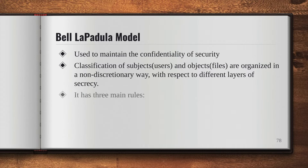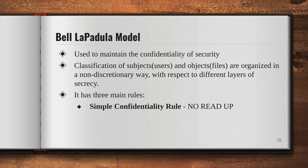The model has three main rules. The first rule is the Simple Confidentiality Rule. This rule states that the subject can only read a file on the same layer of secrecy, but not on the upper level. This is why it's called 'no read up' — you cannot read up, but you can read on the same level and down.